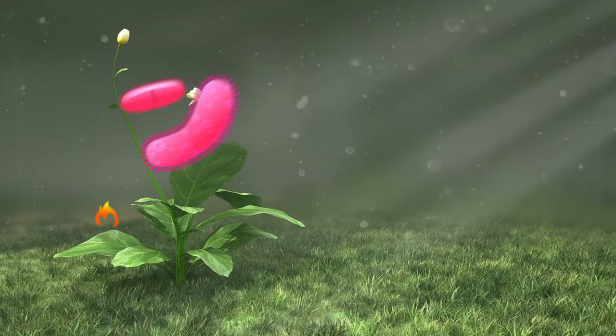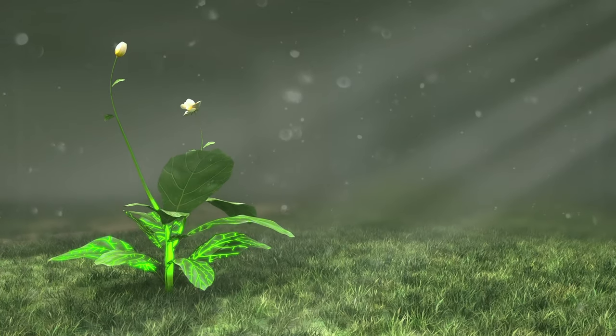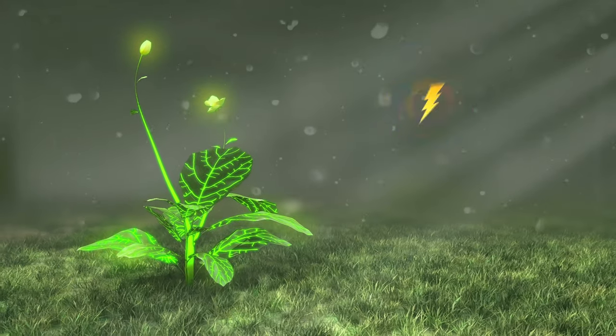Plant cells respond to stress by sending signals from the tissues that first sense it to the entire plant. This type of response is called systemic signaling.